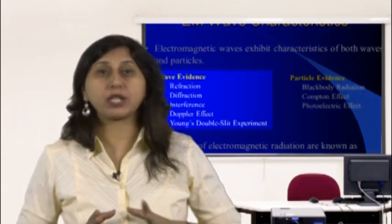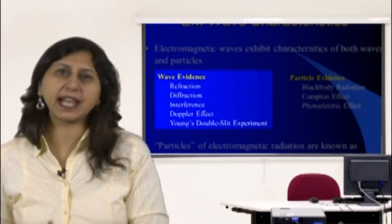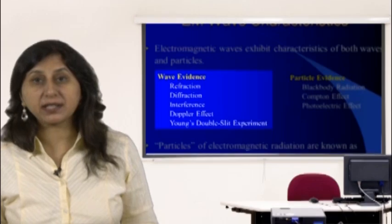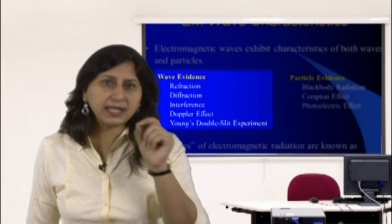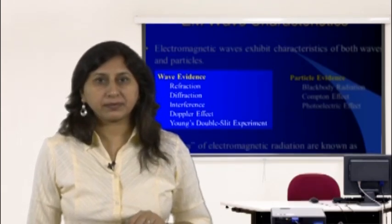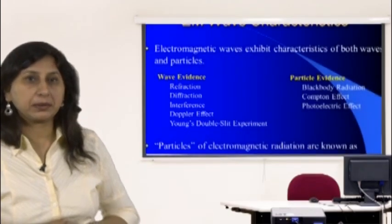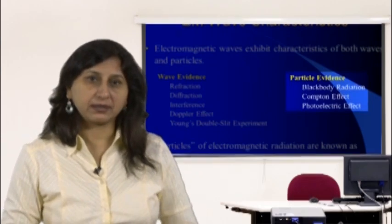We have evidence that light is a wave because it refracts, diffracts, and can interfere with itself like a wave. It also exhibits the Doppler effect, and Young's double slit experiment supports this. On the other hand, there is particle evidence: black body radiation, the Compton effect, and the photoelectric effect. Light sometimes behaves as a particle and at other times as a wave.